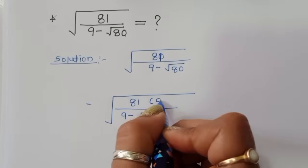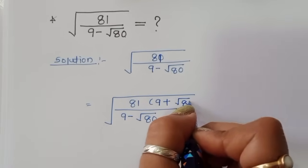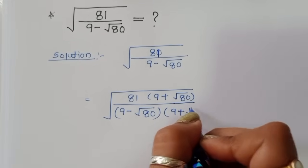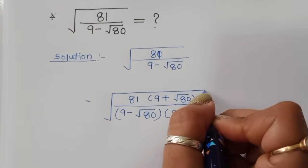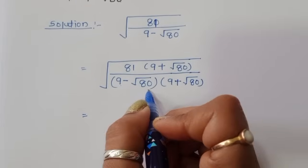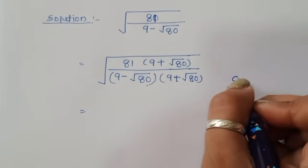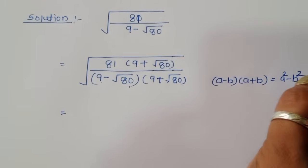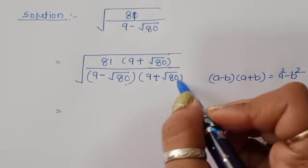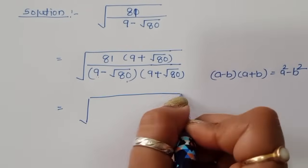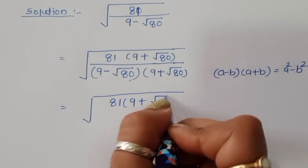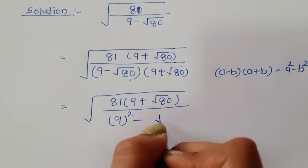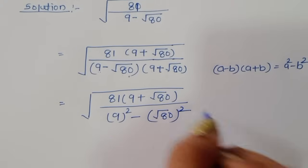To rationalize the denominator, we multiply by 9 plus square root of 80 in both numerator and denominator. Now in the denominator we have 9 minus square root of 80 times 9 plus square root of 80. Using the formula a minus b times a plus b equals a squared minus b squared, we get square root of 81 times 9 plus square root of 80, divided by a squared minus b squared.